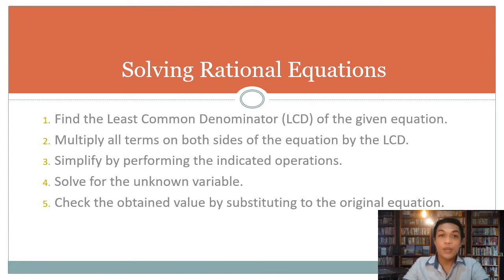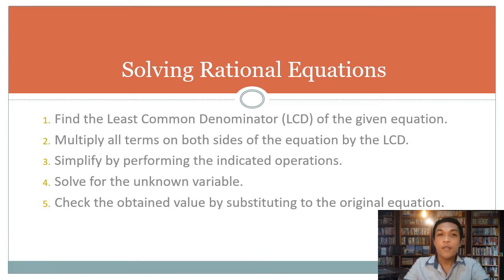First, find the LCD of the given equation. Second, eliminate the denominator by multiplying both sides of the equation by the LCD. Third, simplify by performing the indicated operations. Fourth, solve for the unknown variables. Fifth, check the obtained value by substituting back into the original equation.